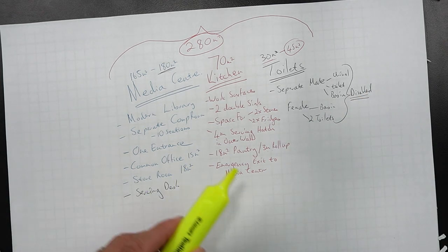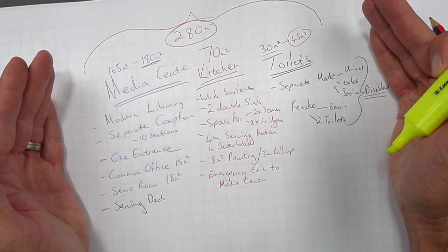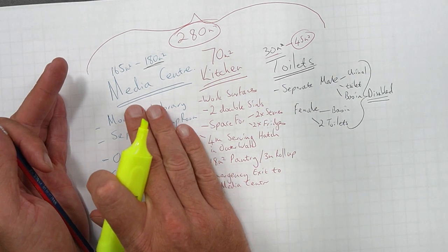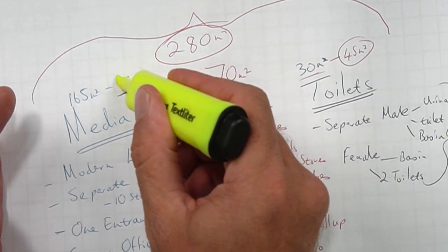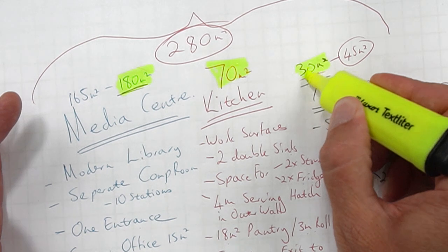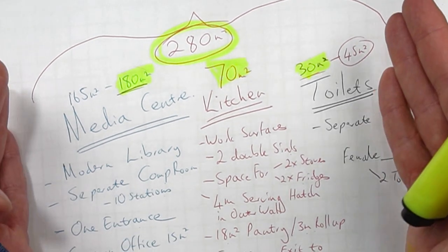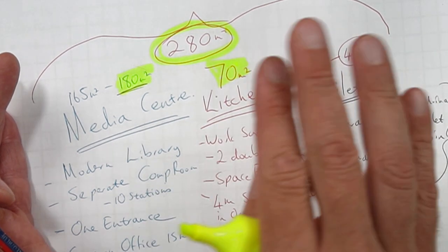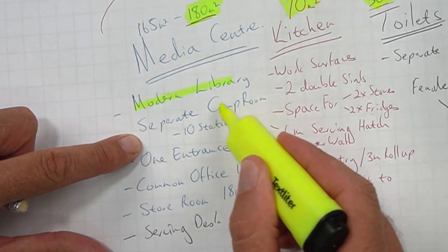Before you start drawing, I recommend doing a brain map of each key part. We have the media center specified at 180 square meters, the kitchen at 70 square meters, and the toilets at 30 square meters, giving a total area of 280 square meters. The measurements and dimensions of your building cannot exceed 280 square meters, though there is one catch I'll come back to.